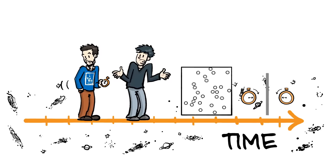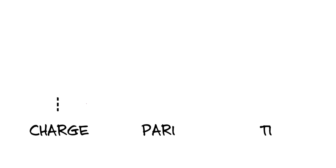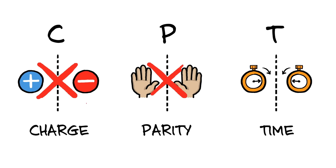What's interesting is that physicists once thought that parity, charge, and time were these symmetries that were unbreakable. But over time, each of these symmetries was demonstrably violated. So is the ultimate symmetry, CPT, also unbreakable?